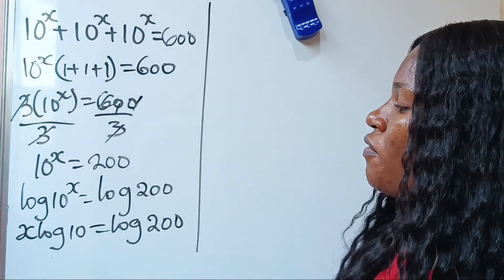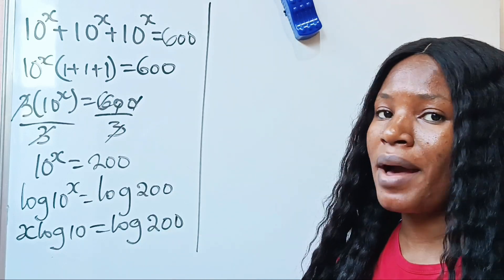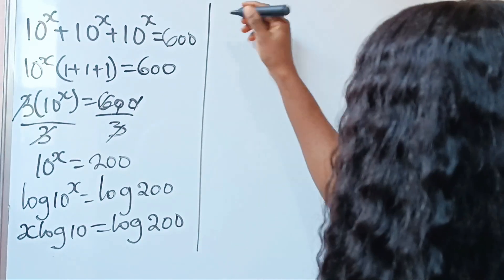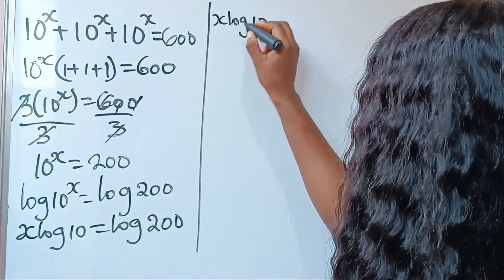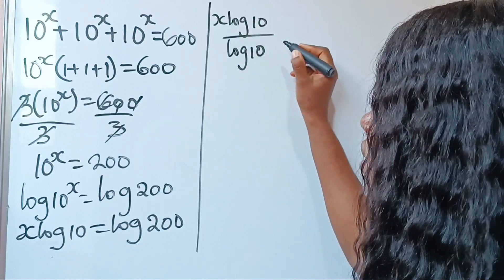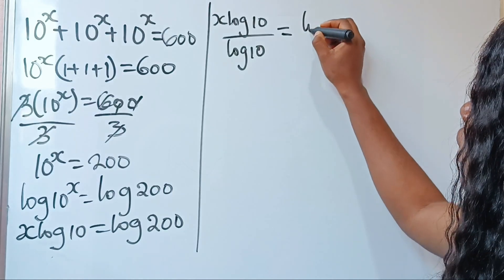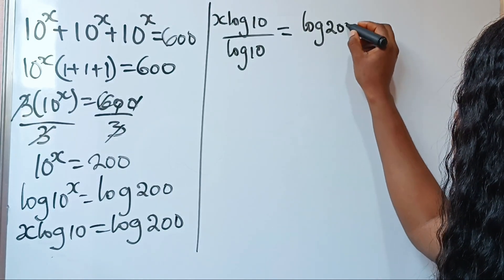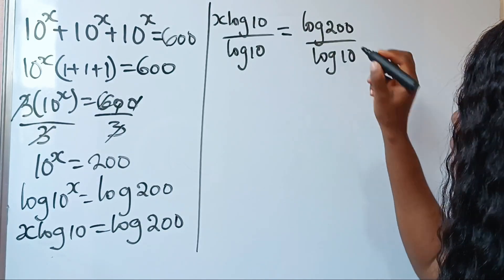Now, to get the value of x, let's divide both sides of the equation by log 10. So we have x log 10 divided by log 10 is equal to log 200 divided by log 10.